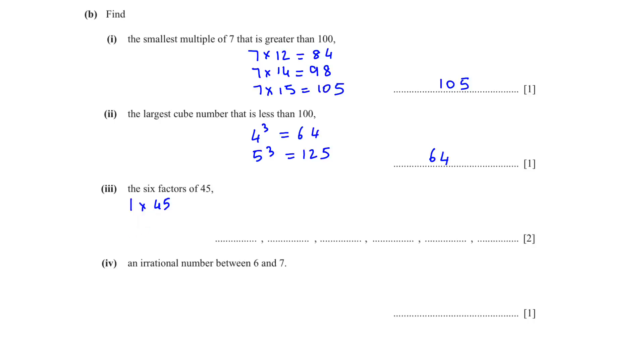The 6 factors of 45: 1 times 45 will give us 45, 3 times 15 will give us 45, and 5 times 9 will give us 45. So our 6 factors are 1, 3, 5, 9, 15, and 45.